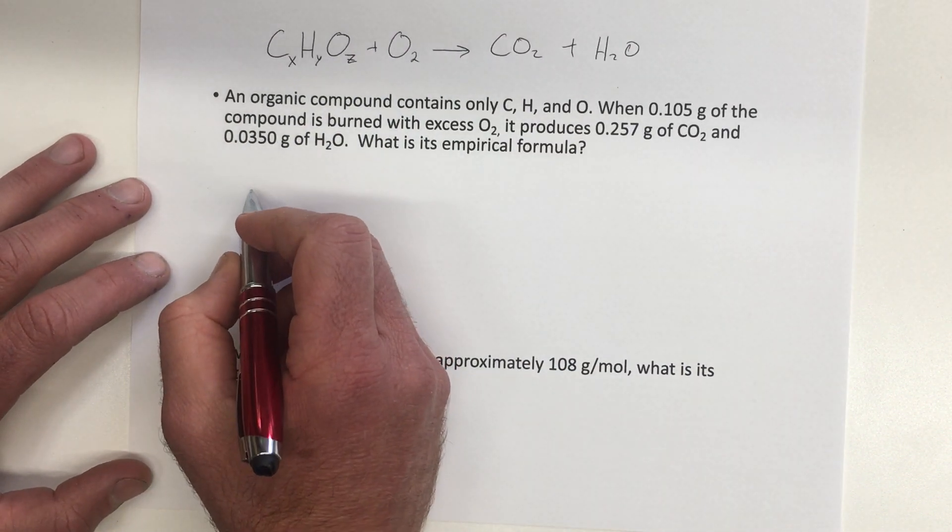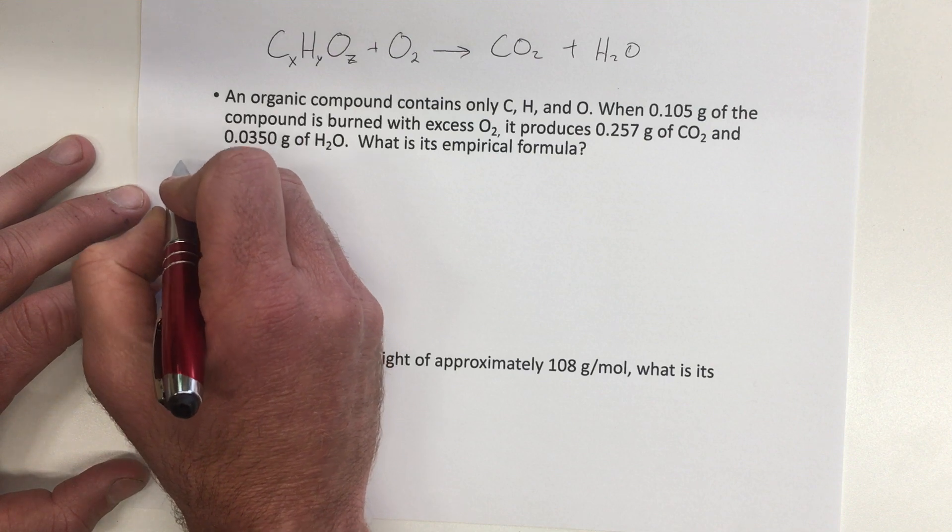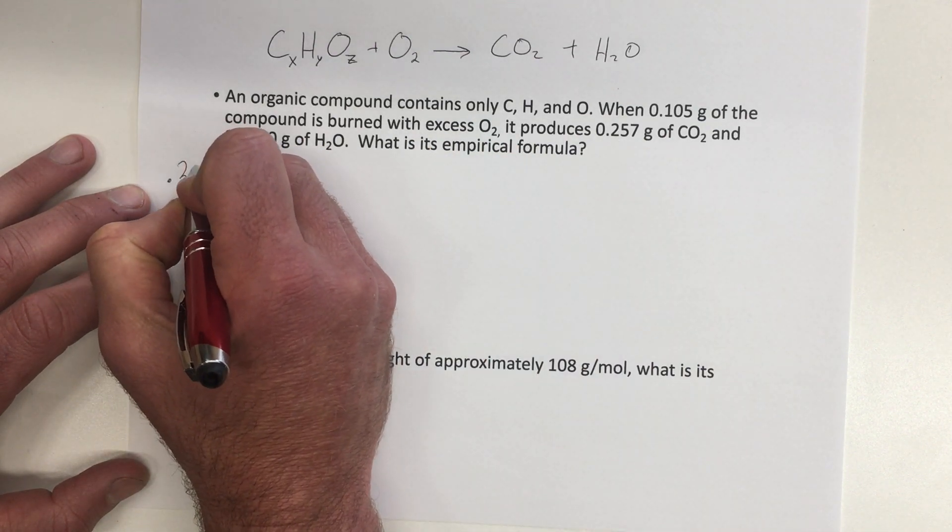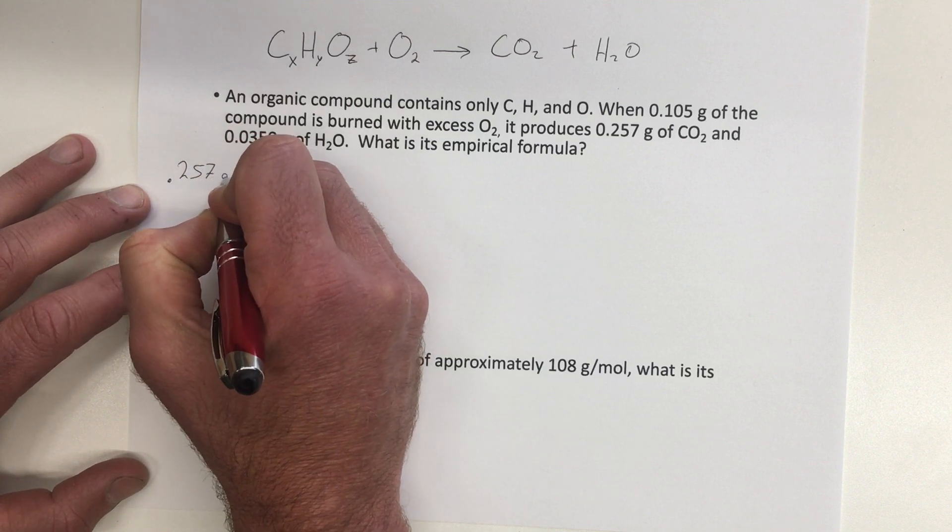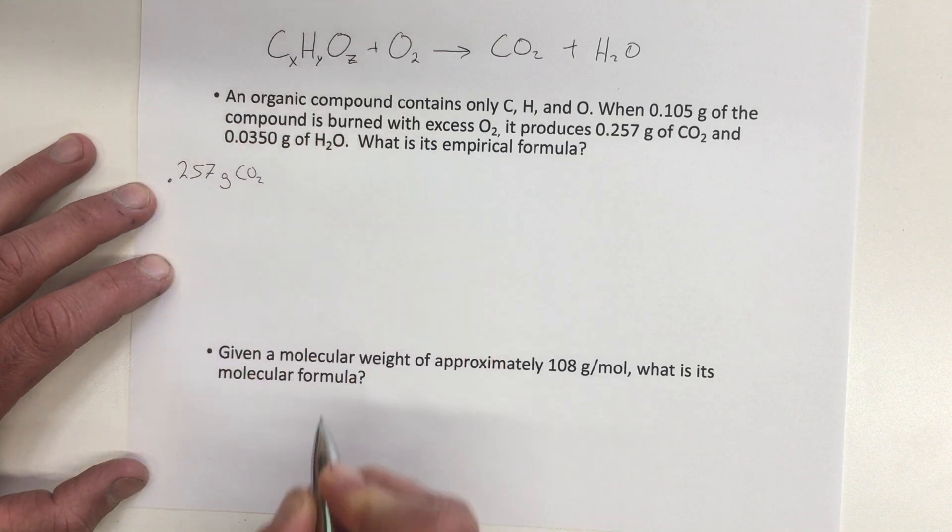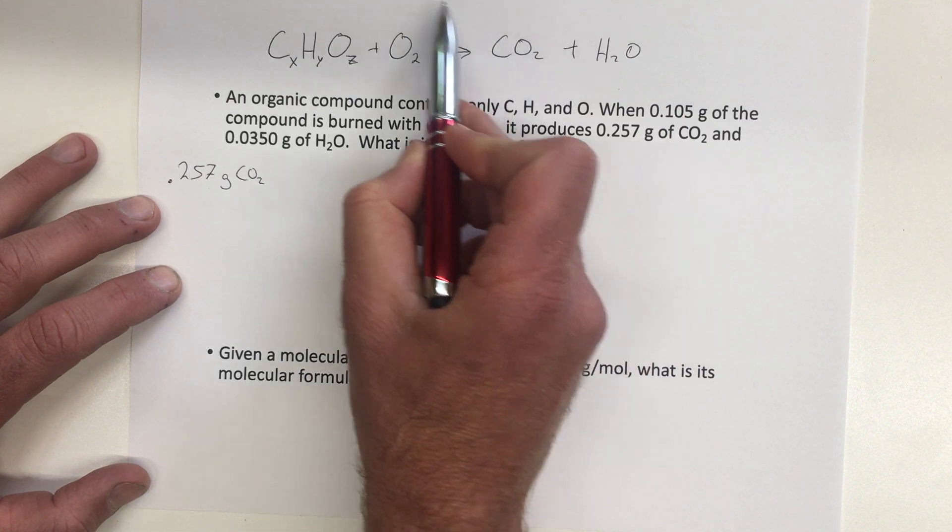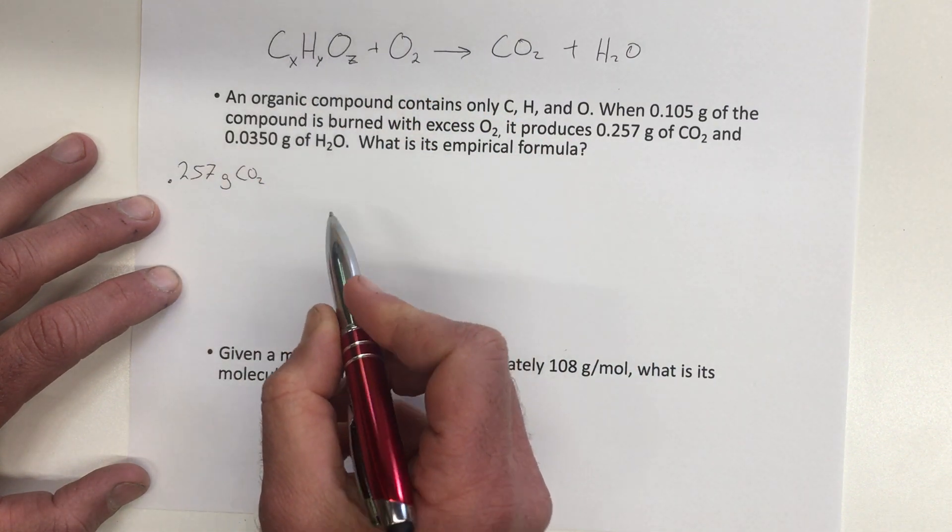So in this example, we're starting out with 0.257 grams of CO2, so that's how much carbon dioxide was produced. We know that all the carbon in that carbon dioxide originally came from this hydrocarbon.